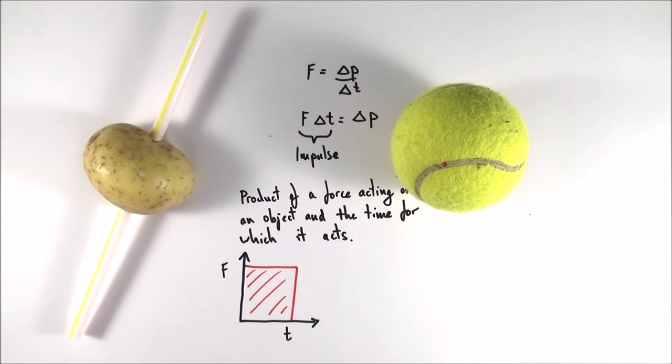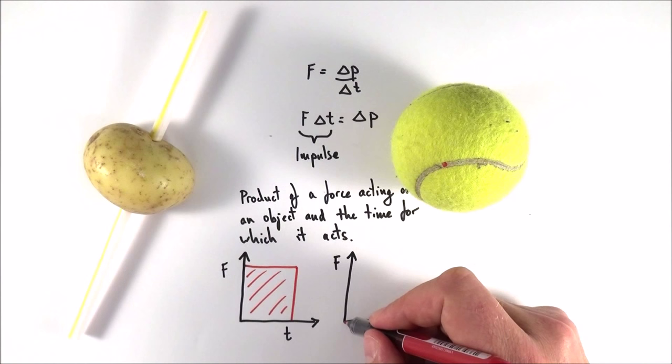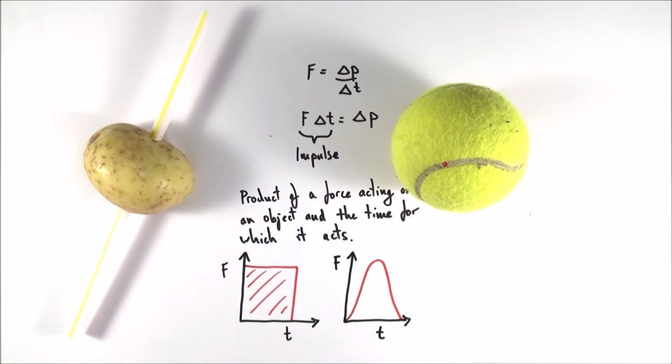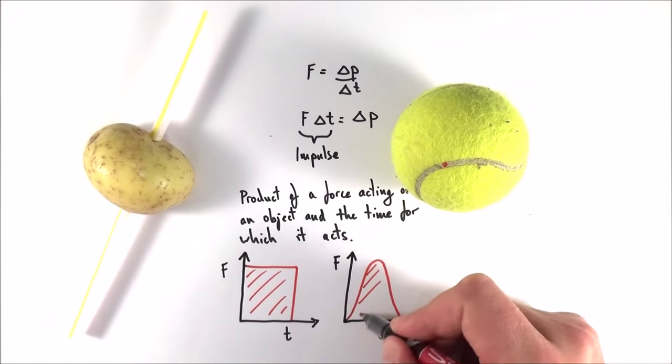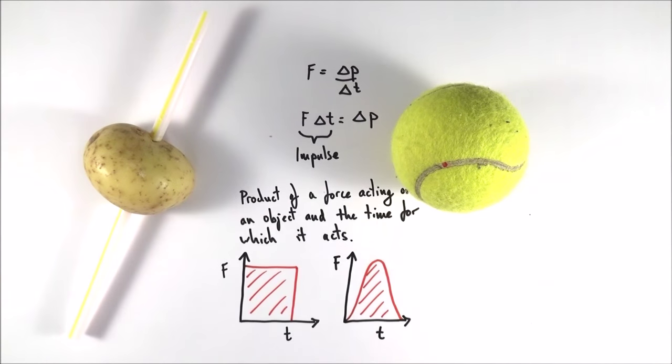And we can maybe look at this on another type of force time graph. And what we actually see is that the force isn't constant over that collision. But again, the impulse, or the thing which causes that change in momentum, is still going to be equal to the area under that graph.